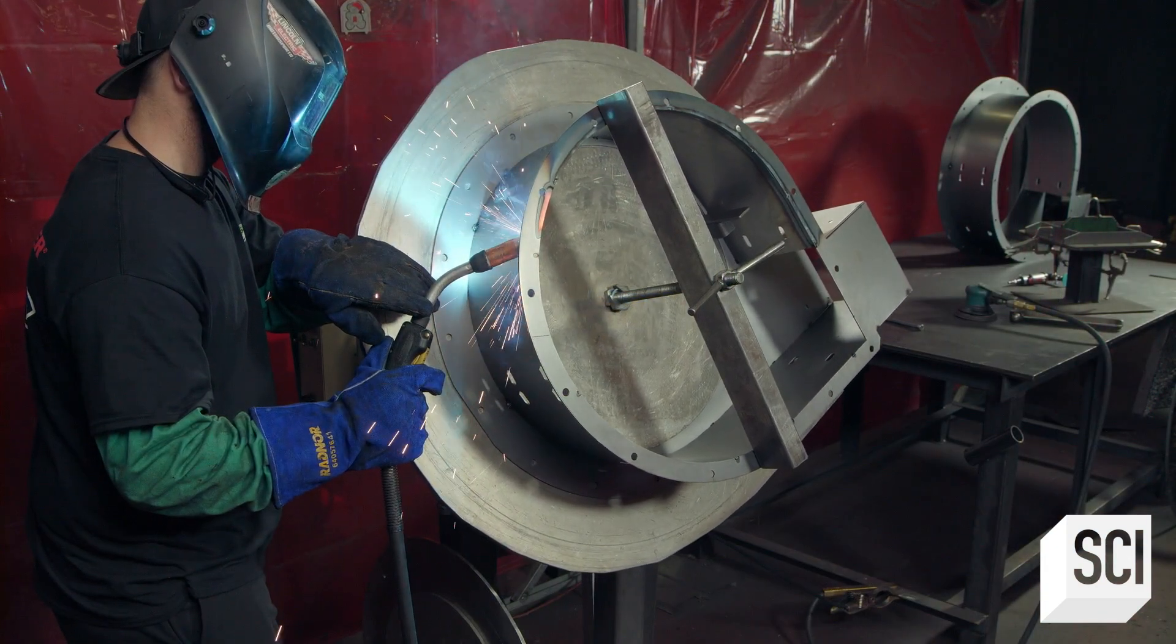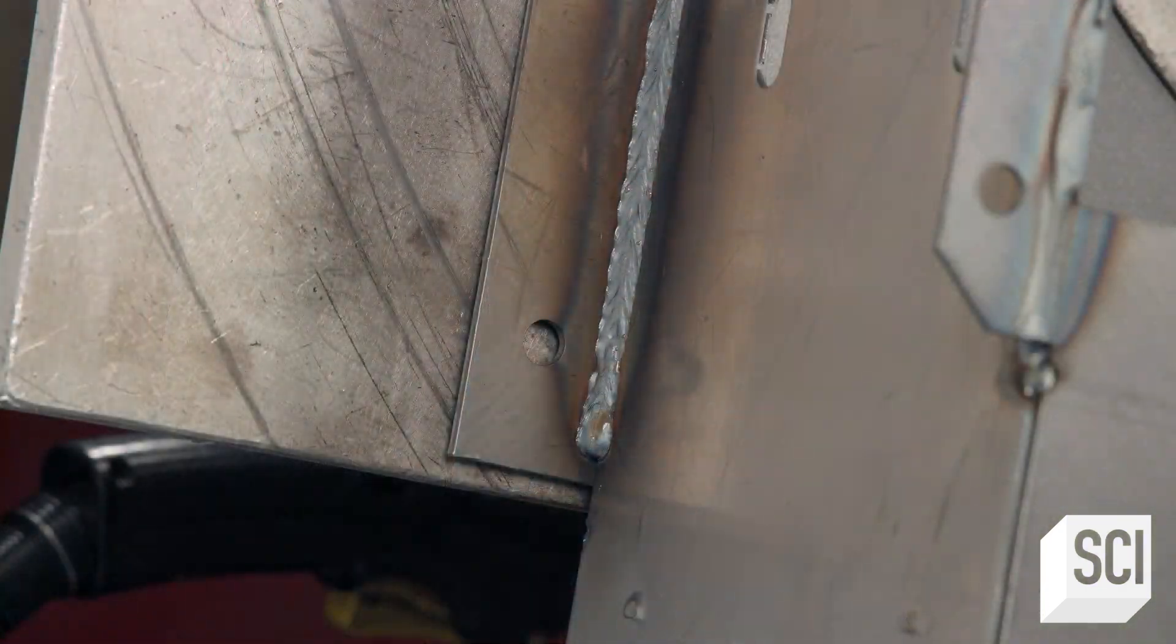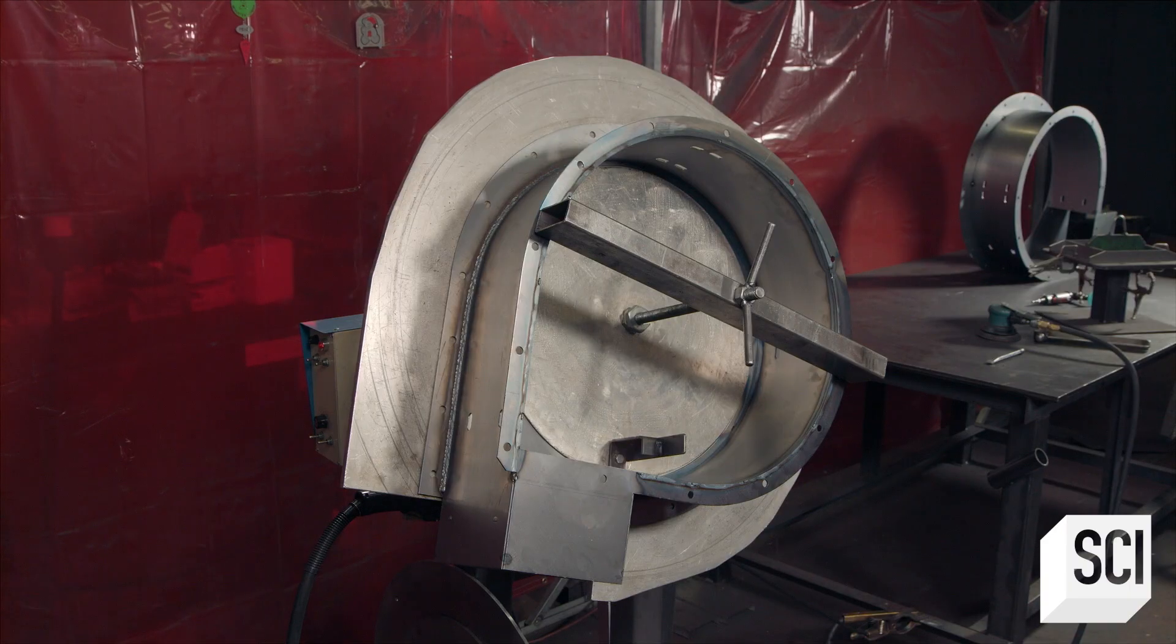The parts are placed on a rotary welding table and the tack joints are welded together. The fused seams ensure the housing is airtight.